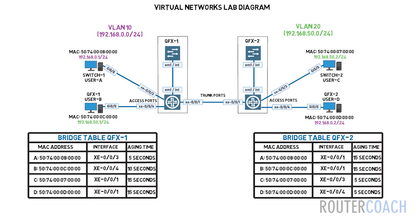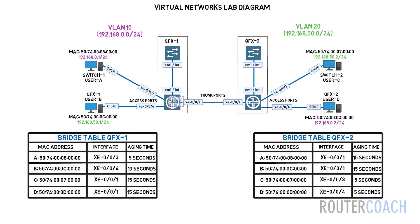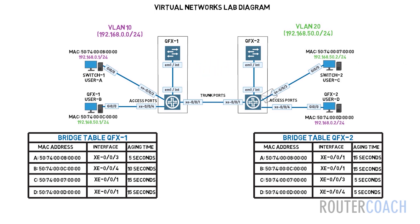When QFX switch 2 receives the frame it will also do a MAC address lookup in its bridge table. It's going to remove the tag from the ethernet frame and forward the untagged frame out the egress interface, which is the access port connected to user D. This process will be repeated if user B in VLAN 20 connected to QFX1 wants to send ethernet frames to user B connected to QFX switch 2.